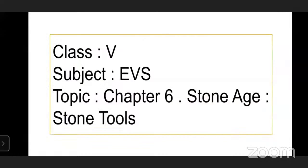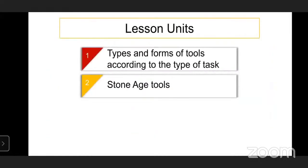Class Five, Subject EBS 2, Topic C, Chapter 6: Stone Age and Stone Tools. In this topic, we are going to learn about the types and forms of tools according to the type of tasks.